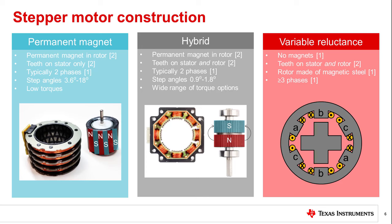Permanent magnet and hybrid stepper motors typically have two phase windings, although in some cases they may have more. Hybrid motors typically have smaller step size and higher torque than permanent magnet stepper motors.